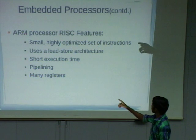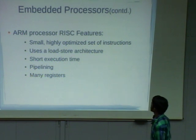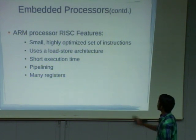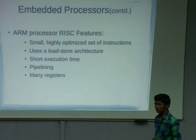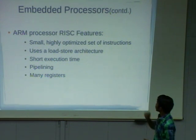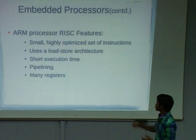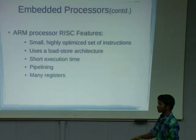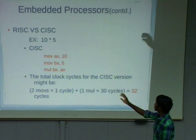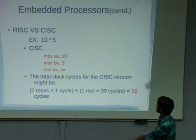RISC supports pipelining and uses load and store architecture. Load and store architecture means if you want to perform any operation, all the operands should be available in registers themselves. The load operation helps to fetch data from memory into registers, and the store operation helps to store data from registers into memory. Now coming to the difference between RISC and CISC.